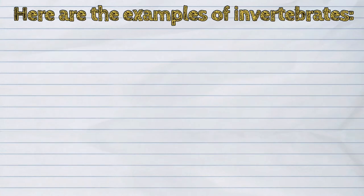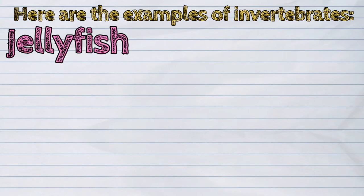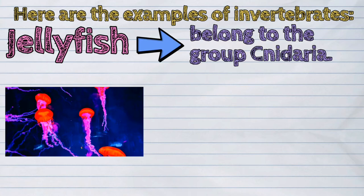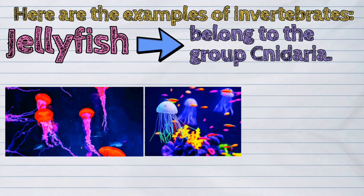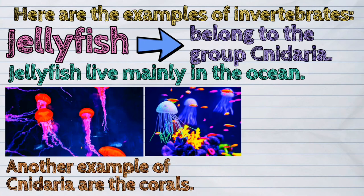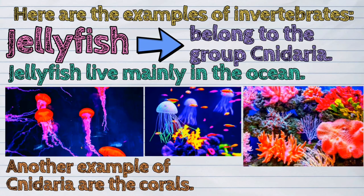The second example is the jellyfish, which belongs to the group Cnidaria. Jellyfish live mainly in the ocean. Another example of Cnidaria are the corals.